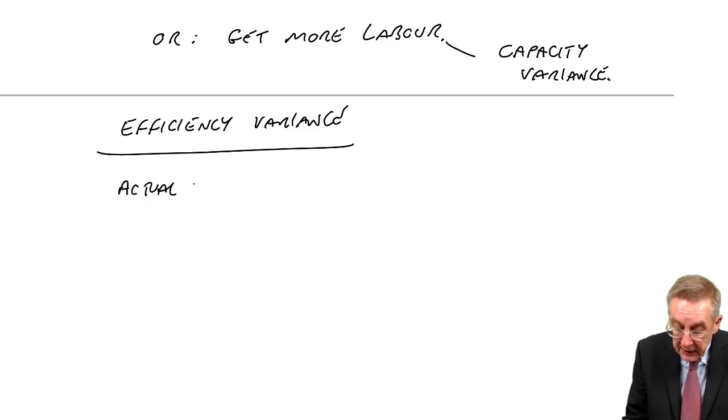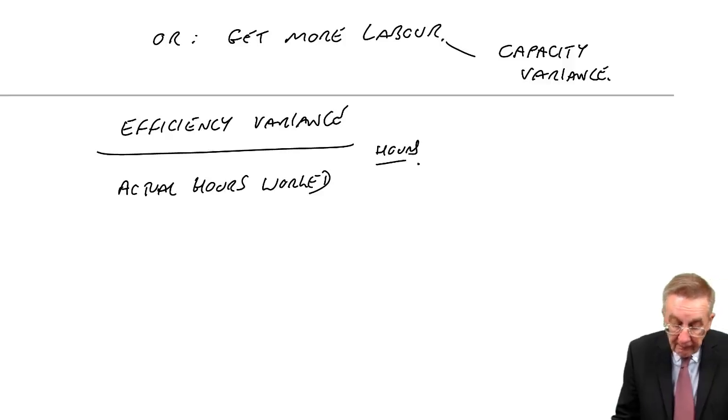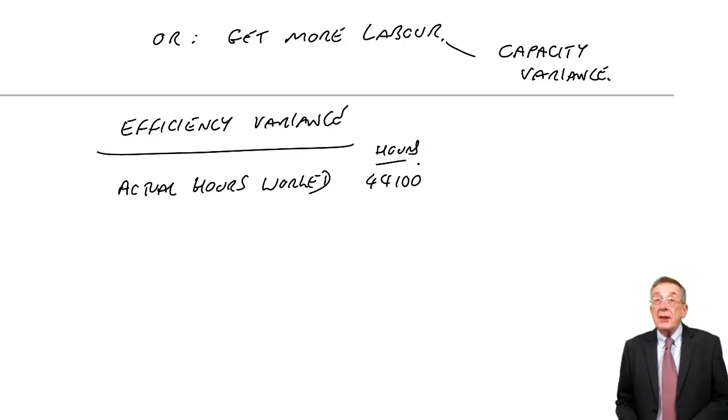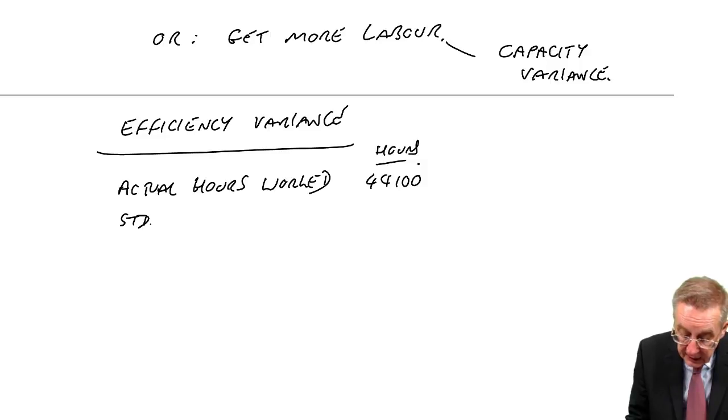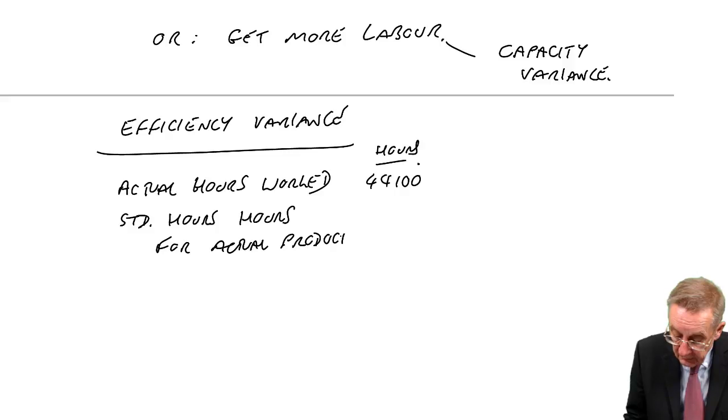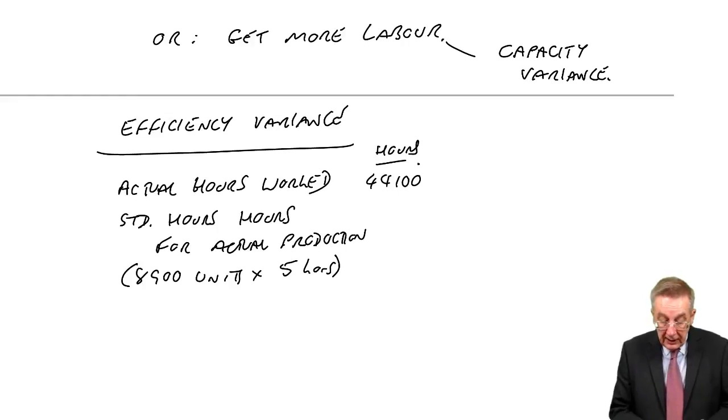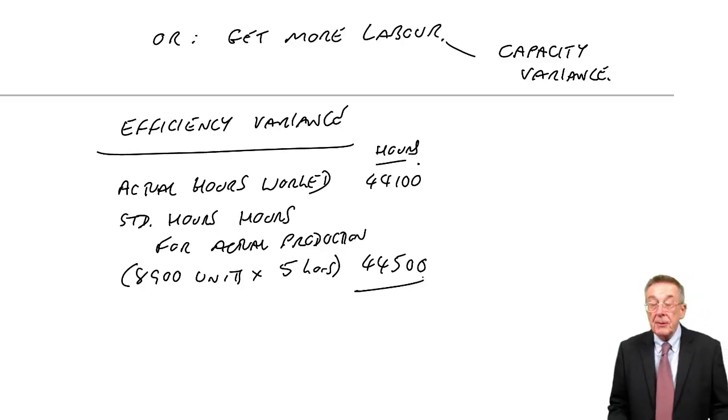Now, in fact, we've already done this twice. If you remember, when we did the labour variances, we did check. Did they work faster or slower? When we did the variable overheads variances, we checked. Did they work faster or slower? And in exactly the same way, we'll do it for fixed overheads. We compare the actual hours worked. Look back at the question. They actually worked 44,100.